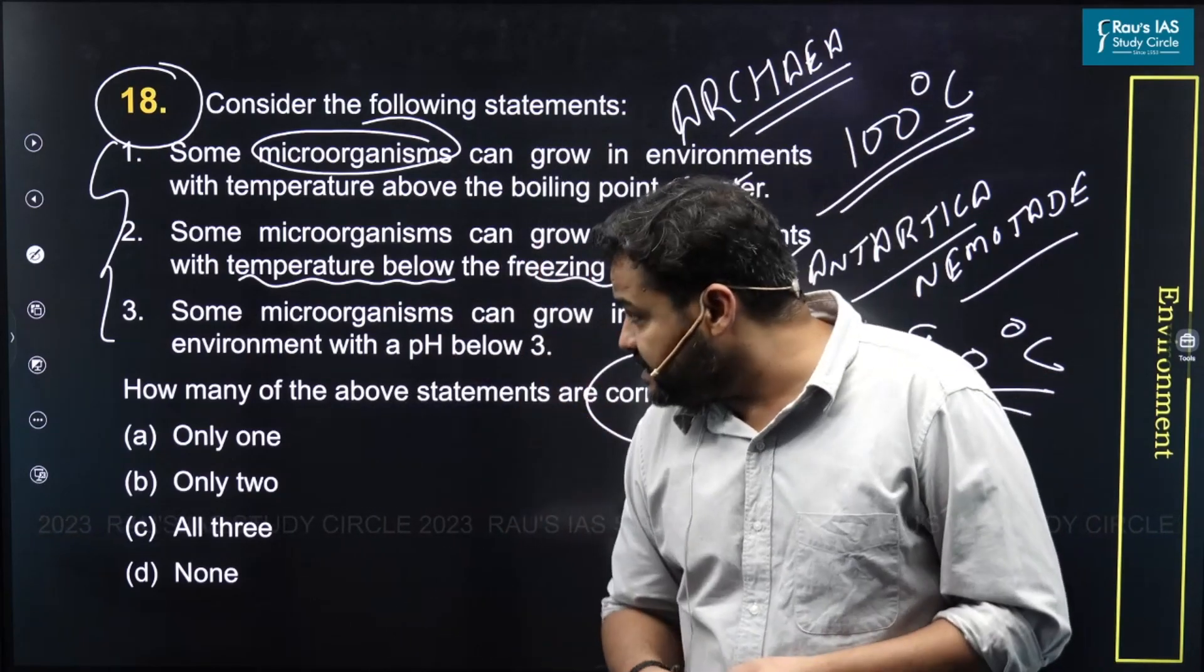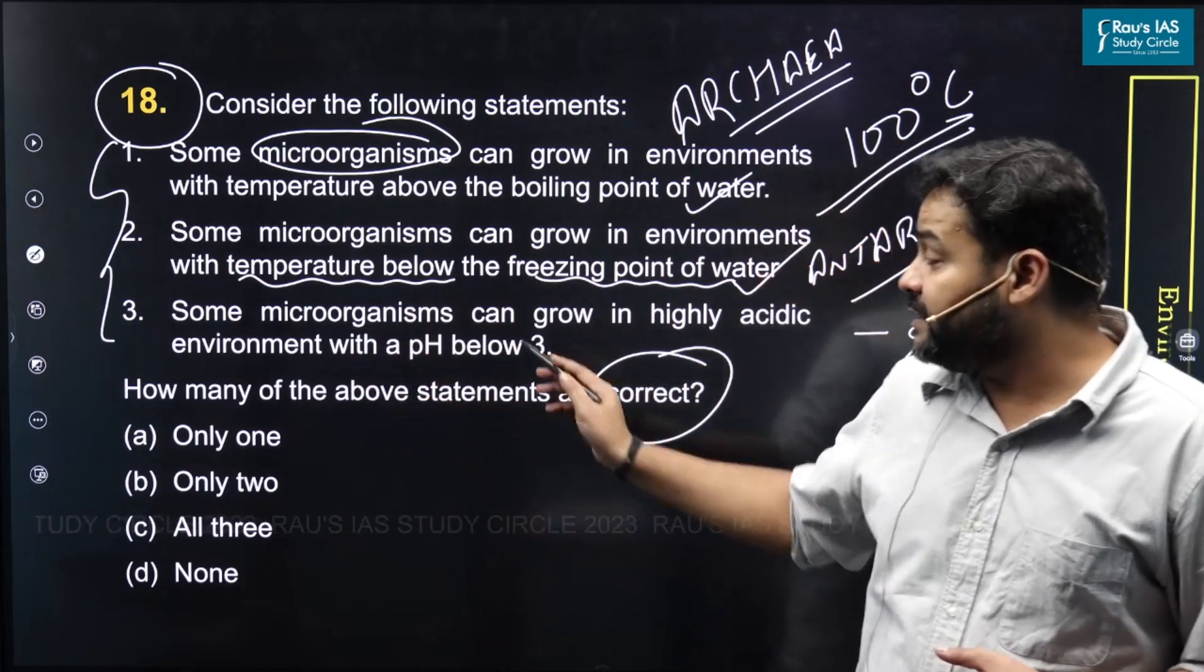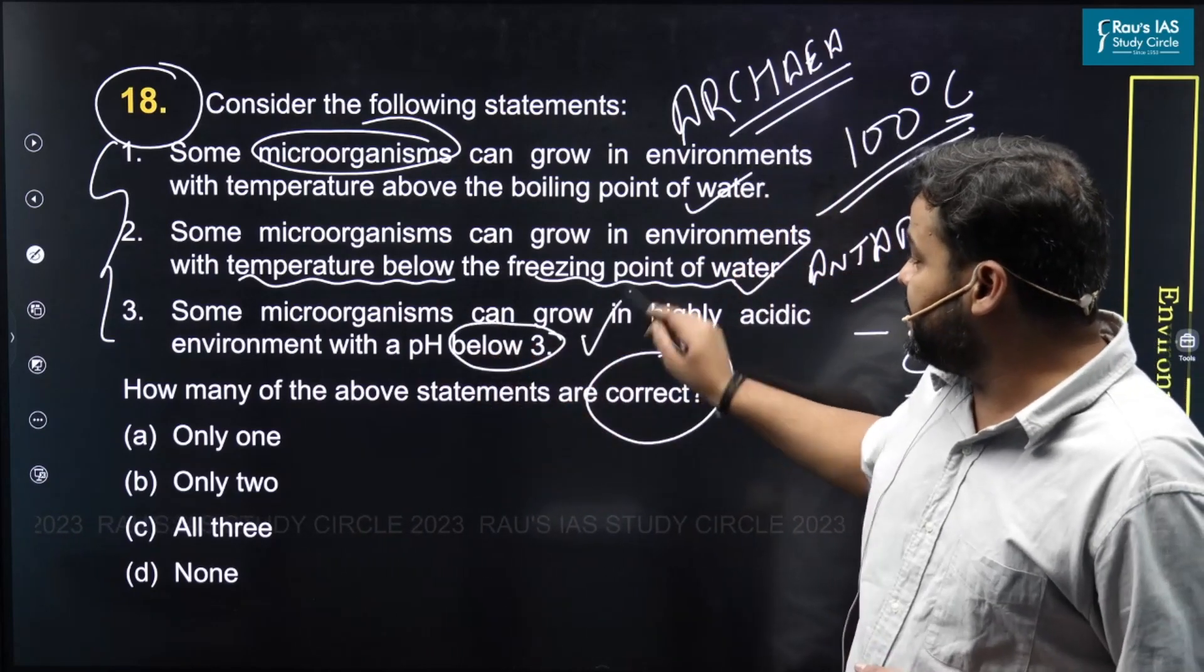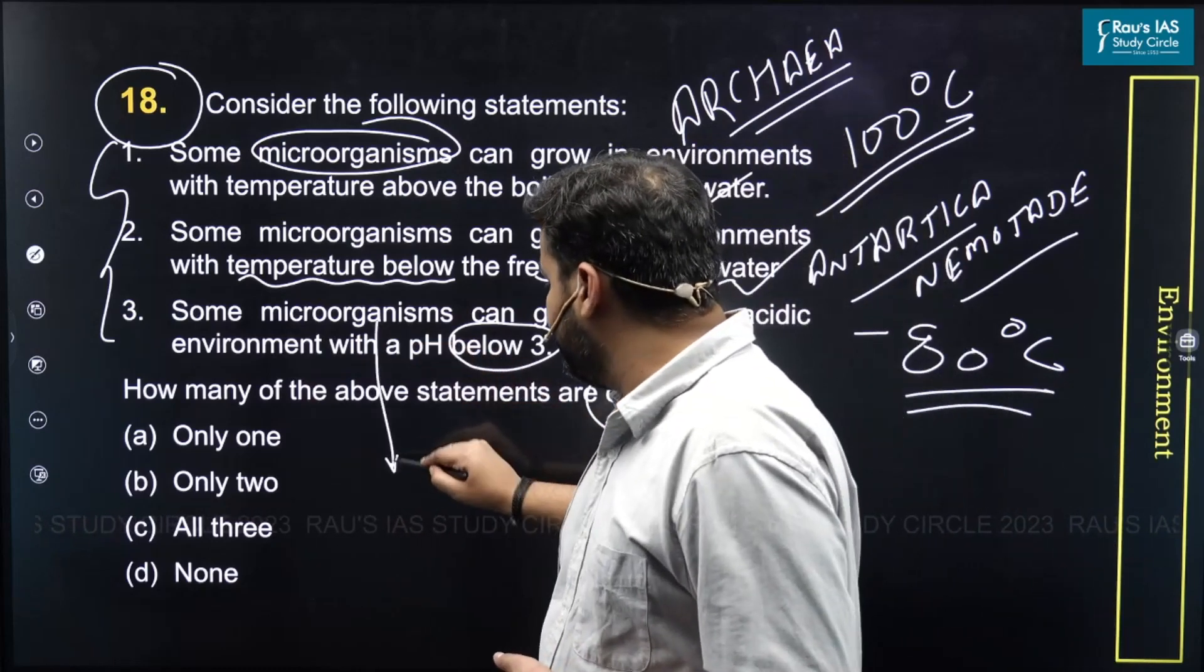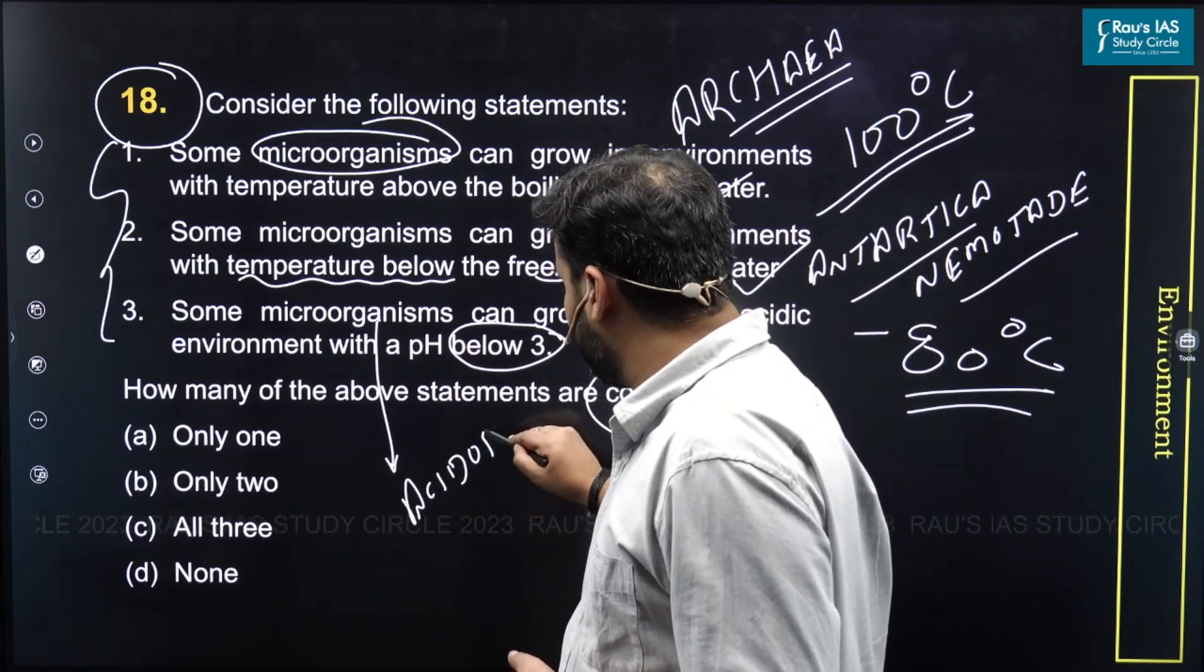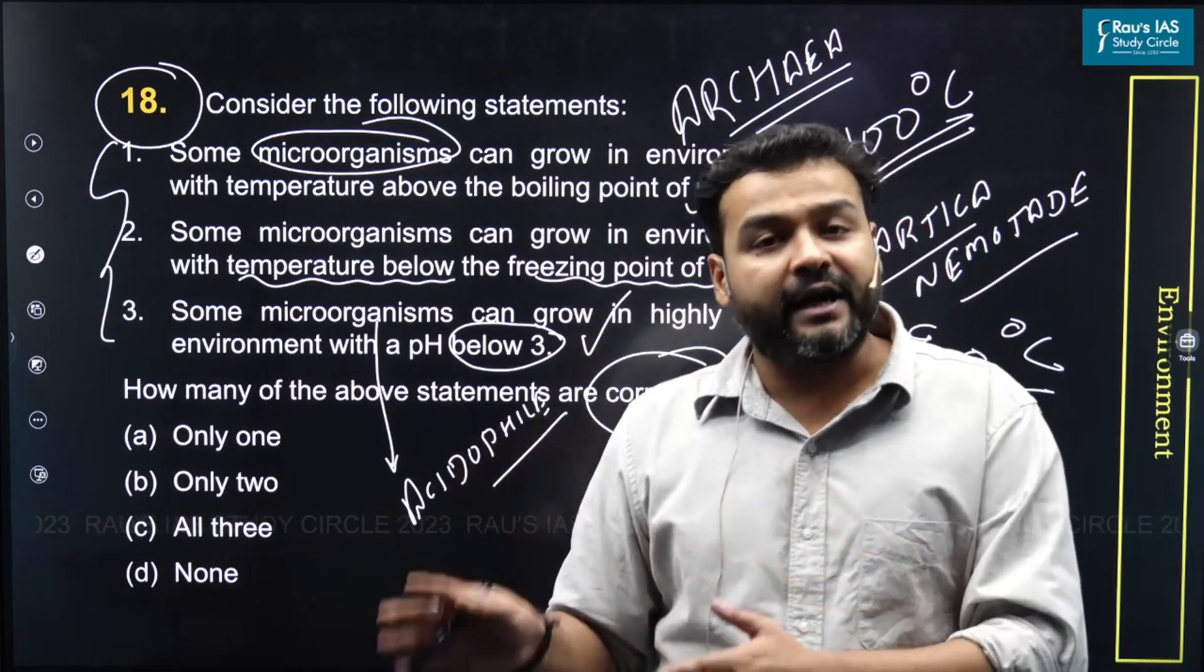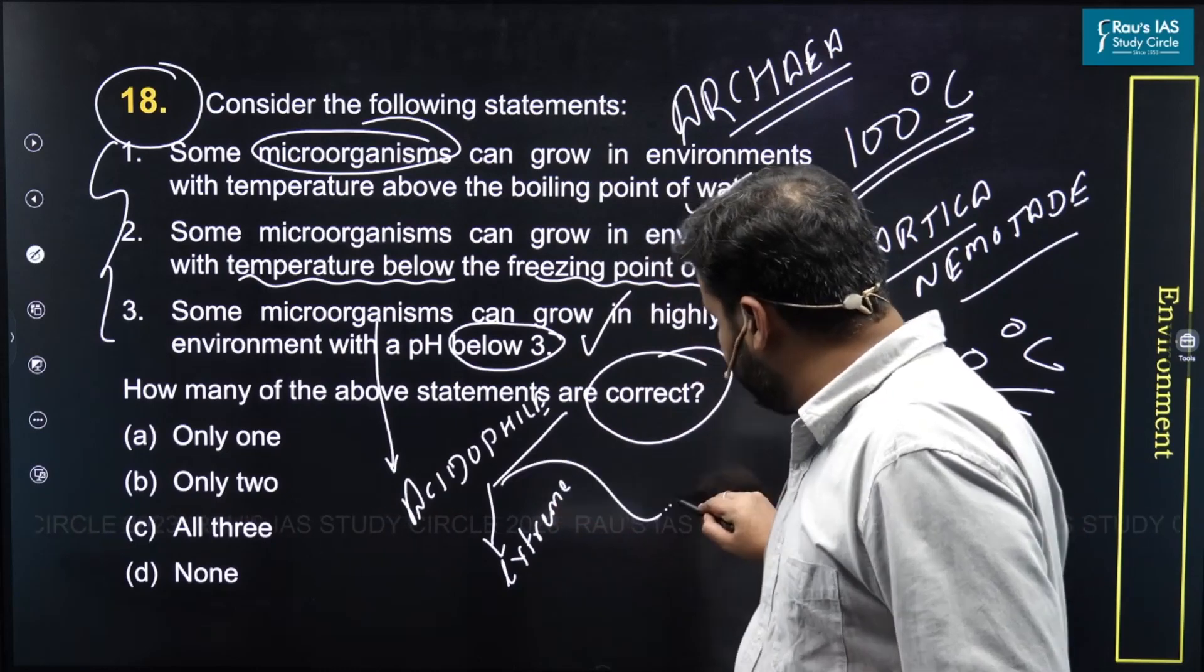Statement three says some microorganisms can grow in highly acidic environments with a pH below 3. This is also a correct statement because this category of microorganism is termed as acidophiles. There are two categories: one is extreme and the other one is moderate.